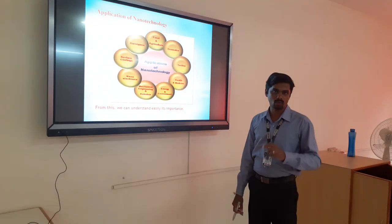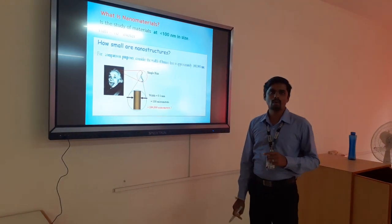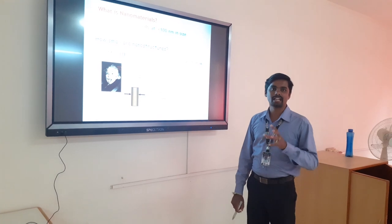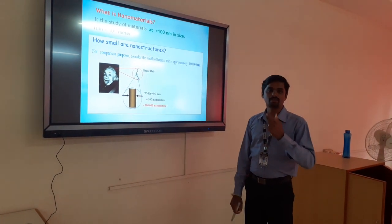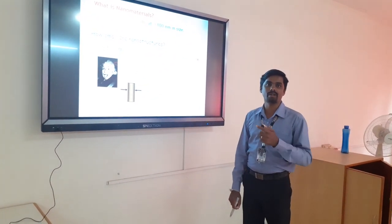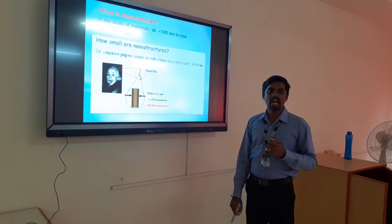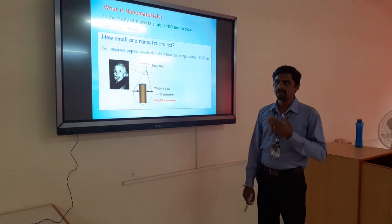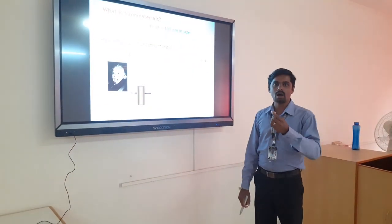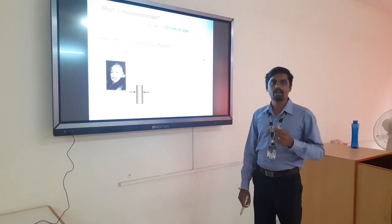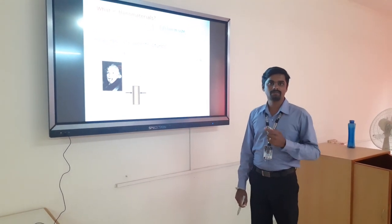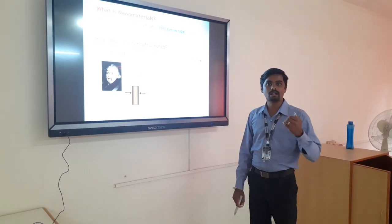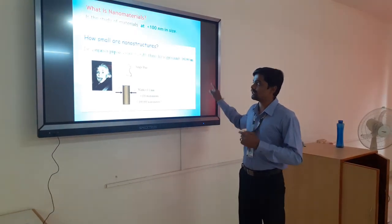From these we can understand easily it is an important area — nowadays it is a very important one. Now we go for what are nanometers or nanomaterials. Nanomaterials are materials with particle size less than 100 nanometers — that is called the nanoscale. One nanometer is equal to 10 to the power of minus 9 meters. For example, our human hair is around 1 lakh nanometers in size, so we can imagine how very small a nanometer is. We have a lot of quantum dot materials like zero-dimensional, one-dimensional, two-dimensional, as well as three-dimensional materials, and these all are covered under 100 nanometers.